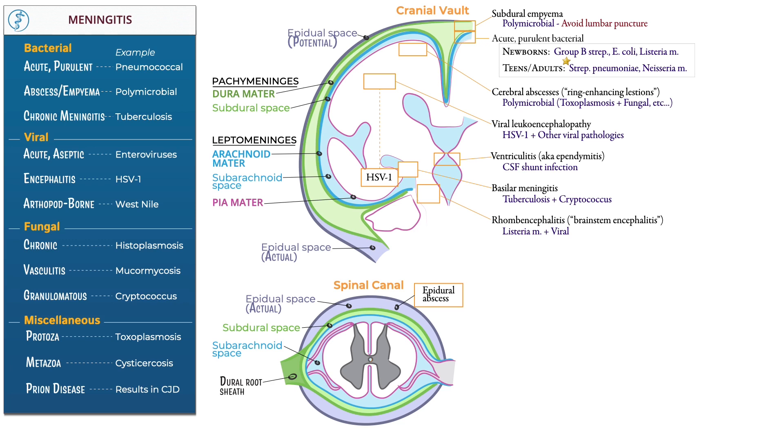Indicate that poliomyelitis invades the anterior horn cells. In addition to polio, West Nile virus also causes this pattern of disease. And indicate that tabes dorsalis is the posterior column dorsal horn attack that occurs from neurosyphilis. Before we conclude,